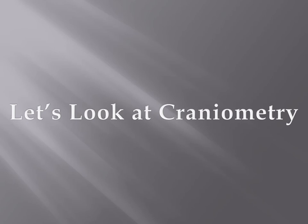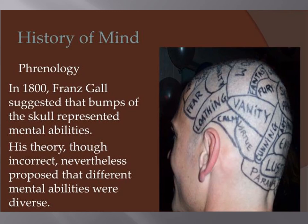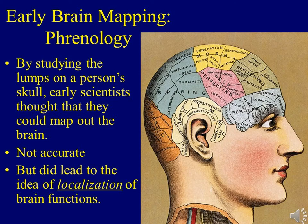Let's take a brief look at craniometry — the measurement of the skull. It originally started as phrenology in 1800 with Franz Gall, who suggested that bumps on the skull represented different mental abilities — the size of your bumps would determine how smart you are in a certain capacity. His theory, though incorrect, nevertheless proposed that different mental abilities were diverse. This early brain mapping led to the idea of the localization of brain functions — that different areas of the brain are responsible for different aspects of personality and bodily functions.